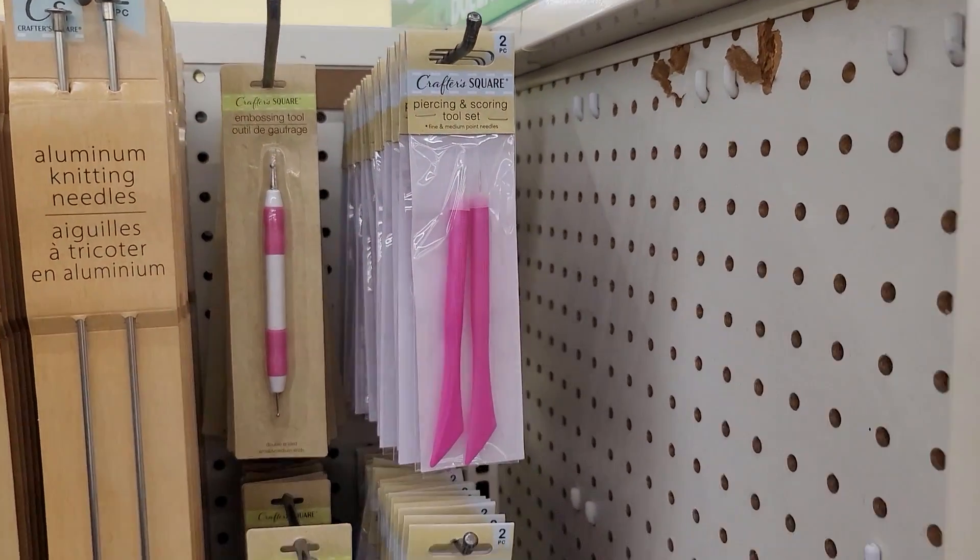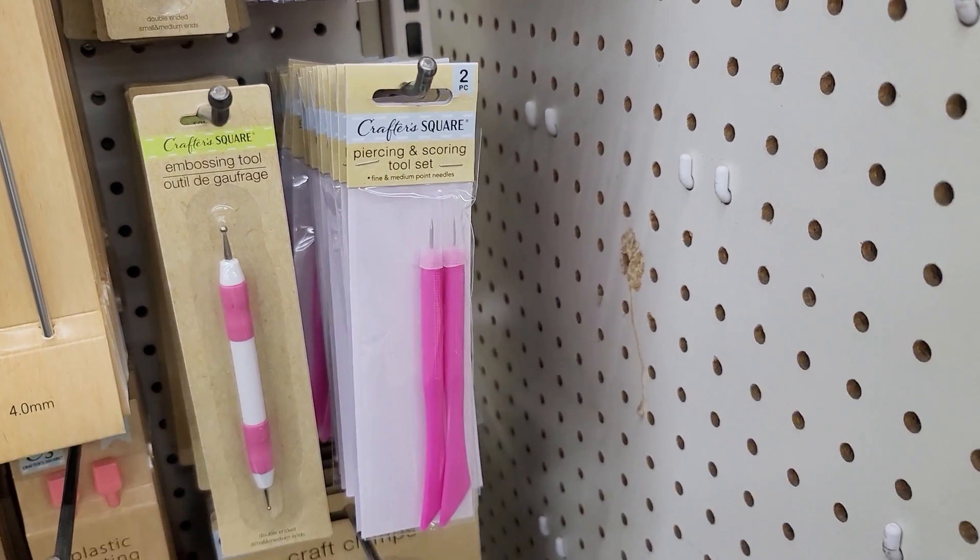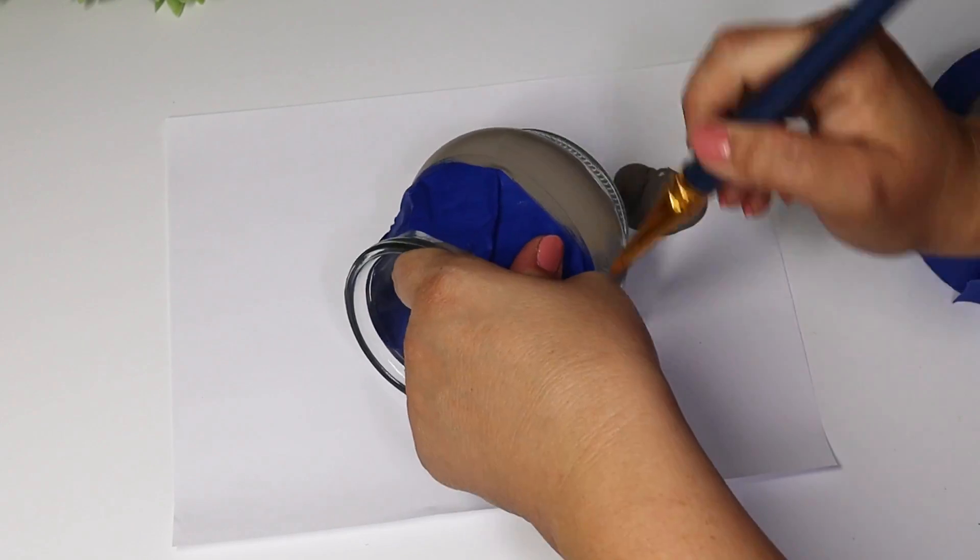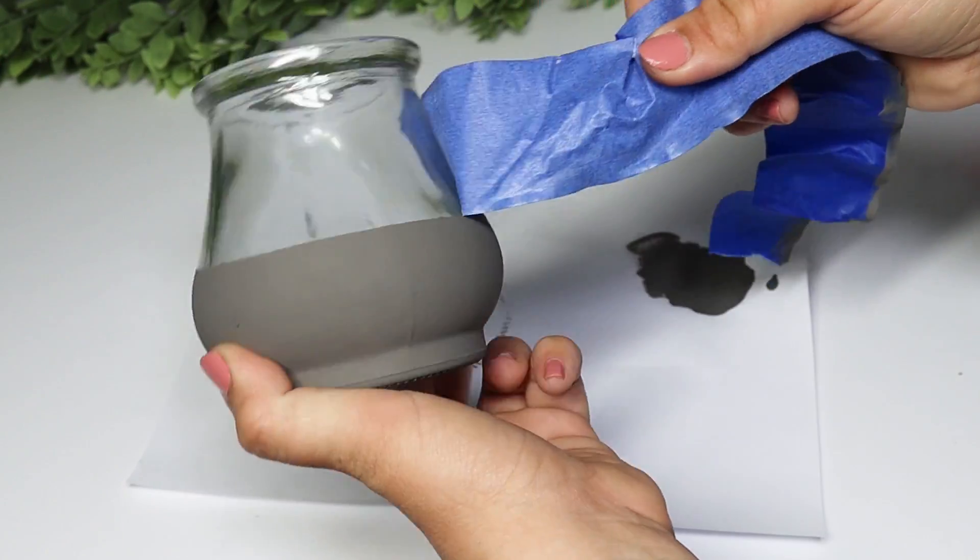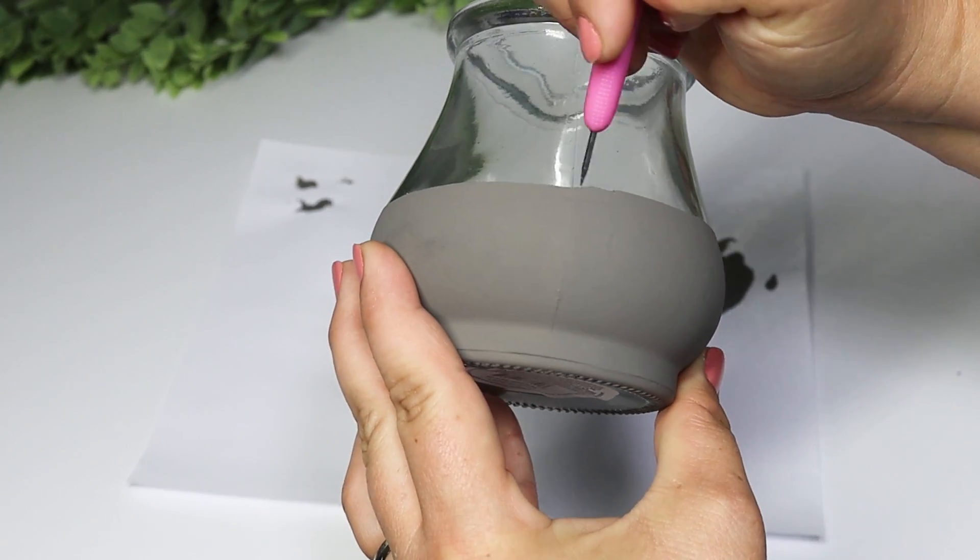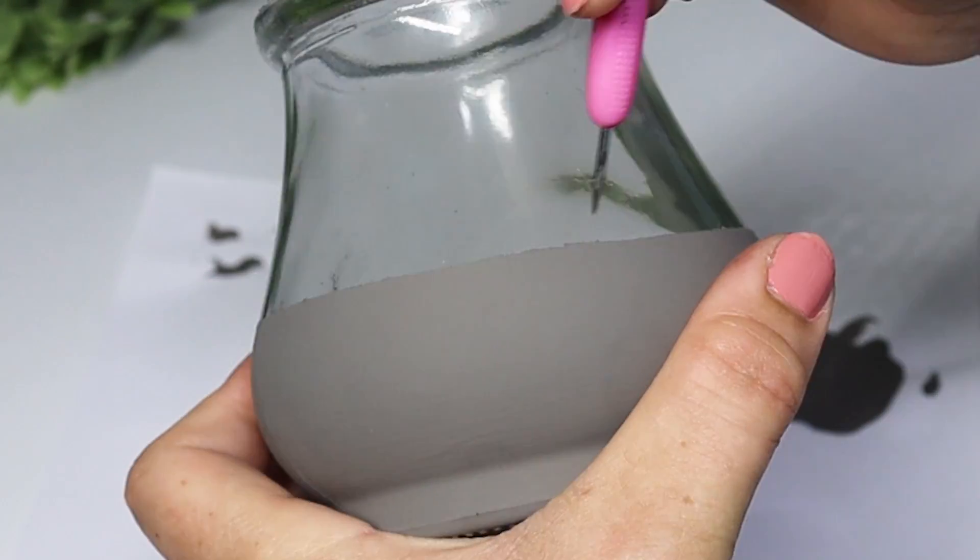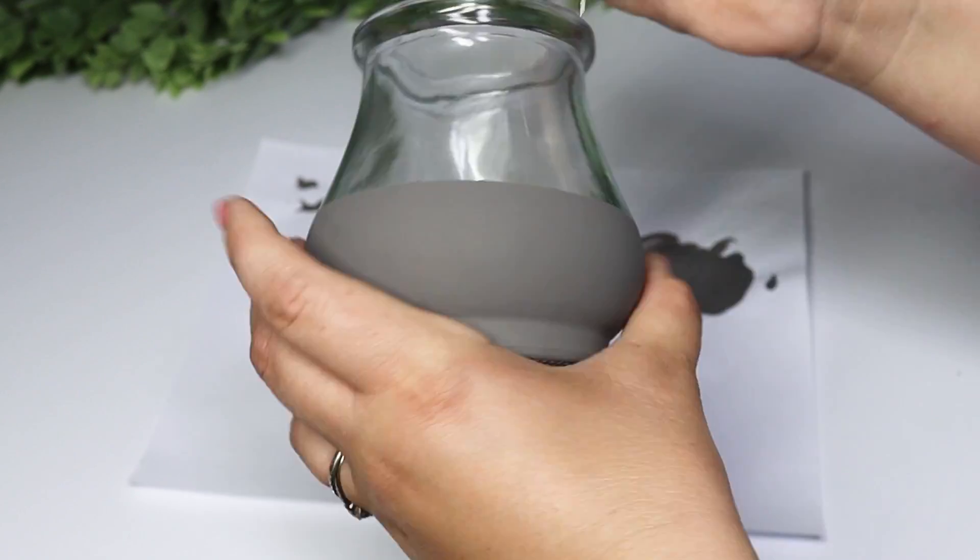The first item that I always make sure I have some of these on hand is my favorite DIY tool at Dollar Tree and it is these piercing and scoring crafting sets. It comes in a two-piece and I use these all the time. Whenever I am painting to get the dipped paint look on all of my jars, you can get such good precision because these have a needle point on the end. I can scratch it away and make it look like it has more of a straight edge.